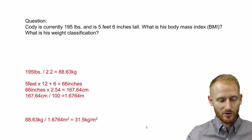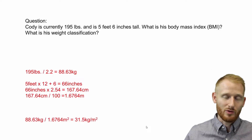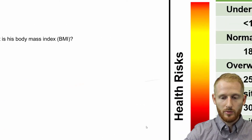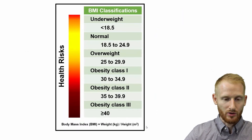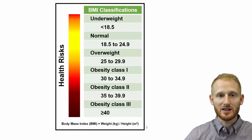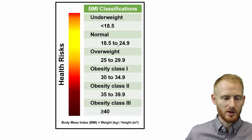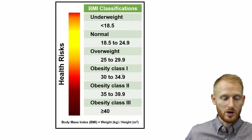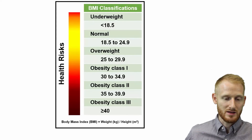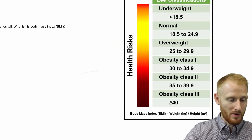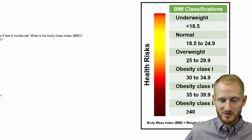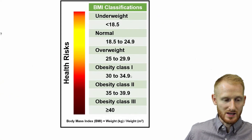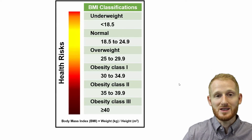So that is the unit for BMI, and Cody's BMI is 31.5. You can find classification charts like this one all over the internet. This simple BMI classification chart shows underweight, normal weight, overweight, and obesity classes 1, 2, and 3. Cody's BMI of 31.5 places him in obesity class 1, so he is obese based on his BMI.